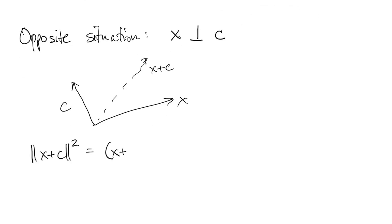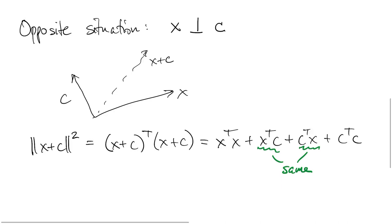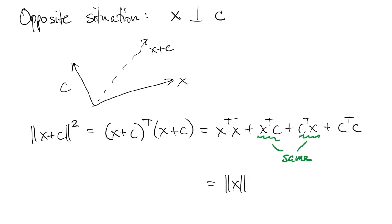We can show that algebraically, too. So using the inner product form of the two-norm, we can distribute the products. And once again, like we saw with least squares, these two terms are actually the same because they're just inner products with the same two vectors. And so we get that term plus two things that are norms.